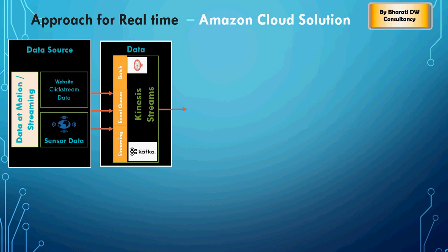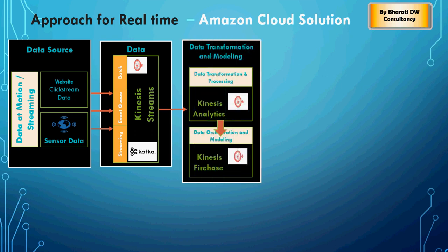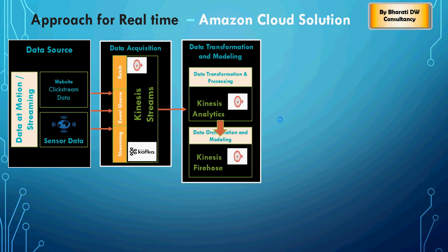From the streams, we are going to process it into Kinesis Analytics, and from there to Kinesis Firehose. Kinesis Streams is a data acquisition platform used to get real-time data, like Kafka or PubSub, and then this stream is going to give this data to Analytics.